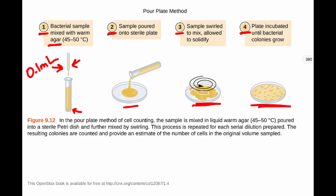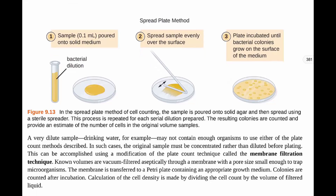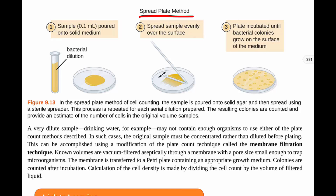The spread plate method works differently. In step one, 0.1 mL of the bacterial dilution is pipetted directly onto a pre-made, fully solidified agar plate. Then a sterile spreader is used to evenly distribute the sample across the entire surface of the plate. The plate is incubated until colonies appear, and then the colonies are counted to give the CFU per dilution.